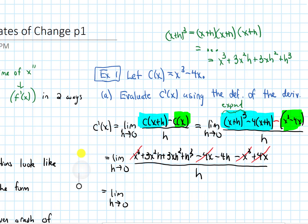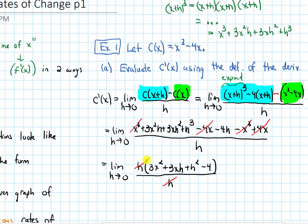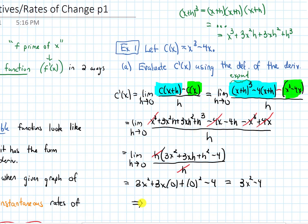After factoring out h, the numerator becomes h times 3x squared plus 3xh plus h squared minus 4, all over h. The h's cancel. Then we plug in 0 for h, giving us 3x squared plus 3x times 0 plus 0 squared minus 4, which simplifies to 3x squared minus 4. So the derivative c prime of x equals 3x squared minus 4.